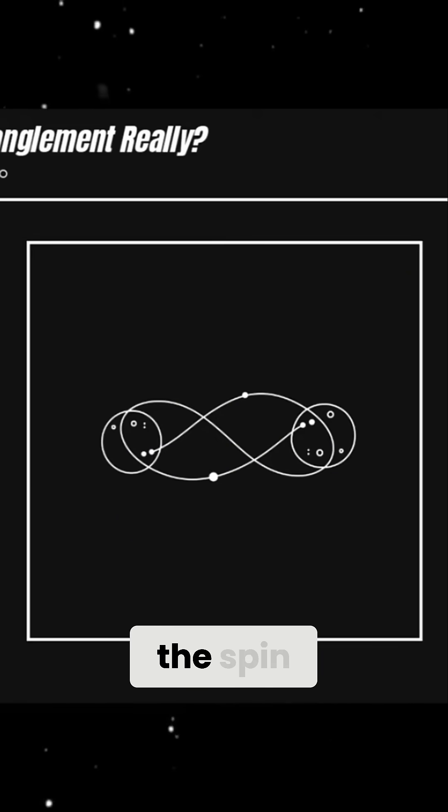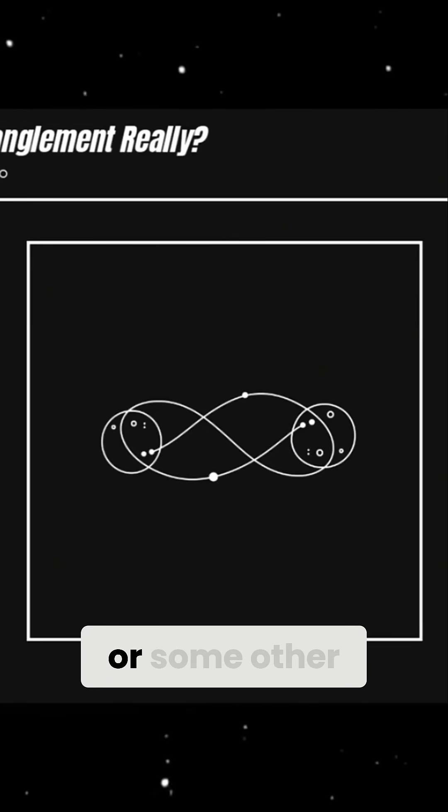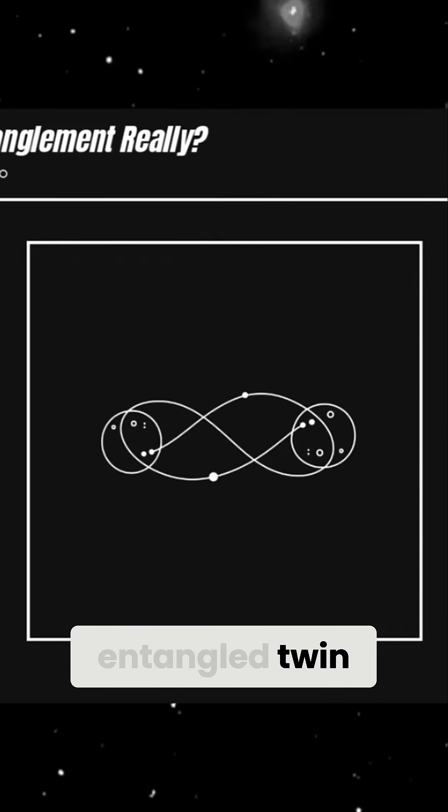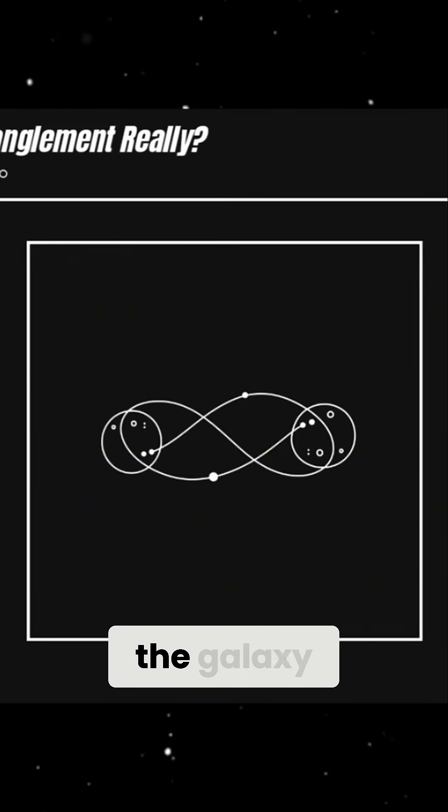This means that if we measure the spin, polarization, or some other property of one particle, we instantly know the state of its entangled twin, even if it's on the opposite side of the galaxy.